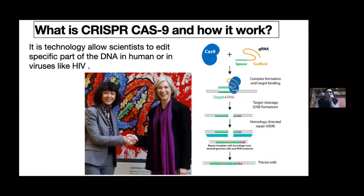First, I will talk about CRISPR. What is CRISPR technology? CRISPR technology allows us to edit specific sequences of DNA using the Cas9 protein. So if we need to add a sequence of DNA to a cell's genetic material, or delete some sequence of DNA, we can do it with CRISPR-Cas9 technology.